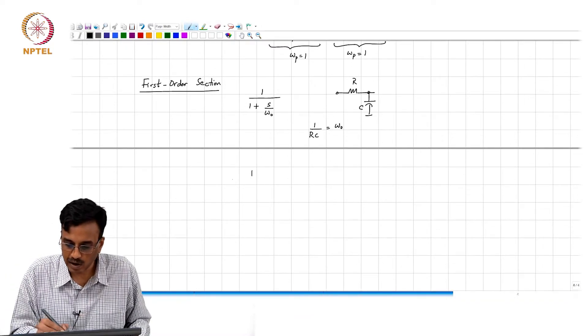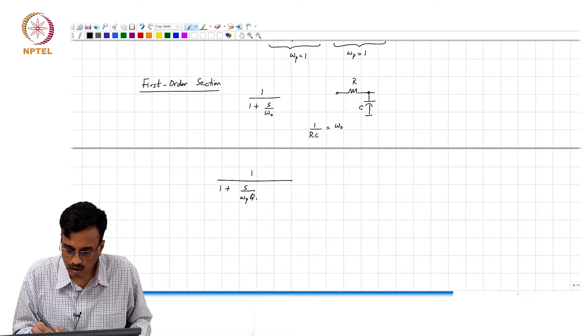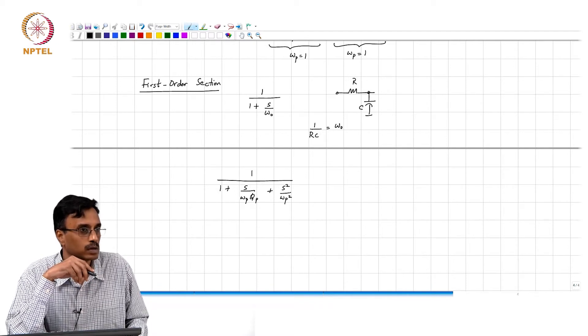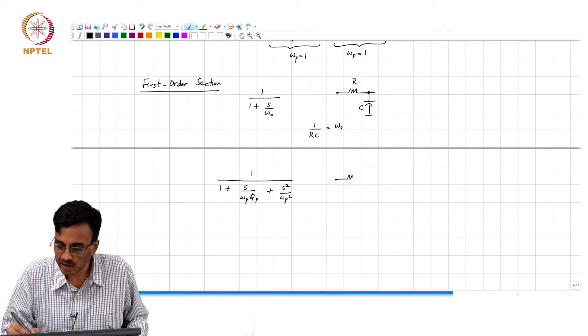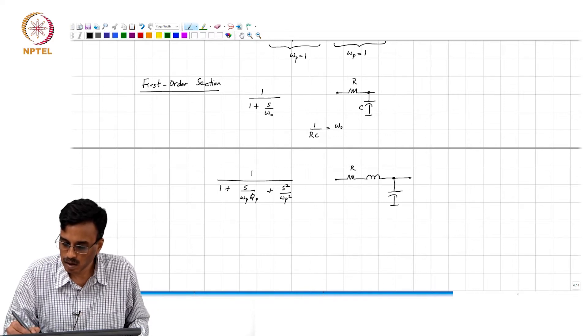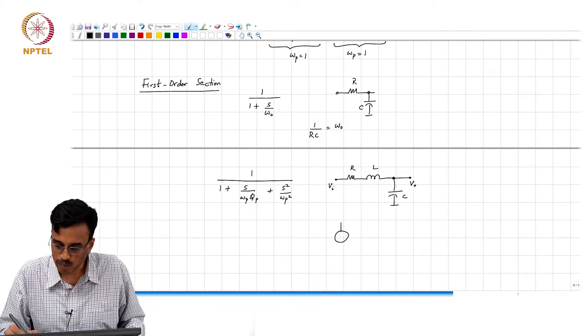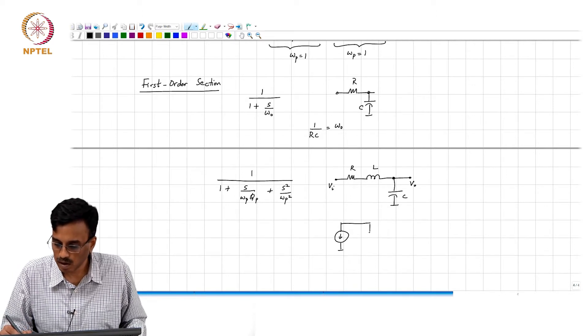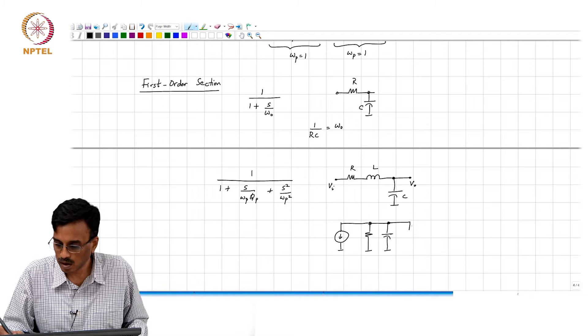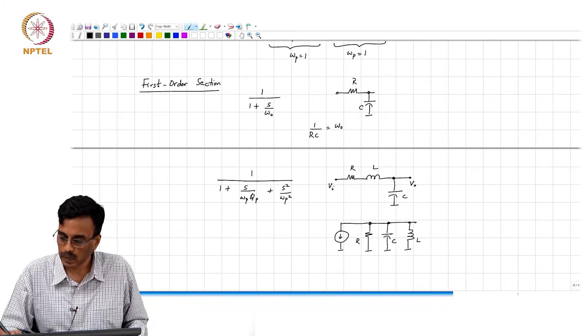What comment can we make about second order section? One suggestion is basically R, L, and C. This is one option. Another option if you have an input current is basically R, C, and L.